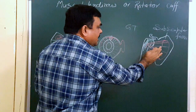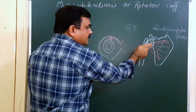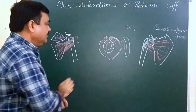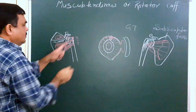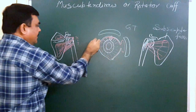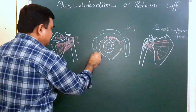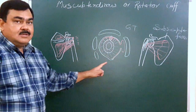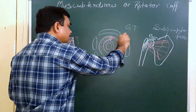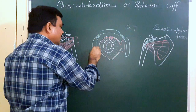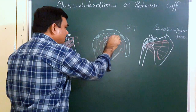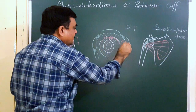The subscapularis muscle crosses the joint anteriorly. Here is the position of the subscapularis muscle on the anterior aspect, the infraspinatus on the posterior aspect, and here is teres minor. The tendons of all these four muscles join with each other and also blend with the capsule of the joint.